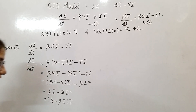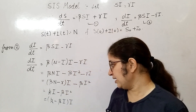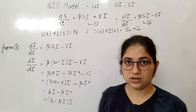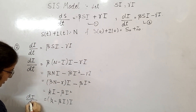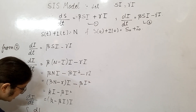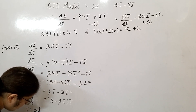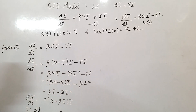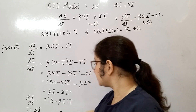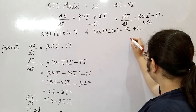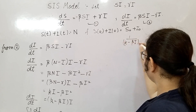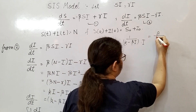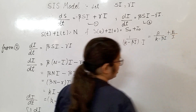We cannot integrate this directly with a general formula, so we first convert using partial fractions. We write: 1 / [(K - beta*I) * I] = A / (K - beta*I) + B / I. Integrating both sides: the left side integrates with respect to I, the right side integrates to give t plus a constant of integration C.